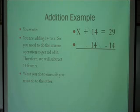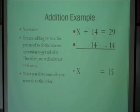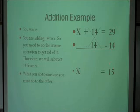On the left side it's going to cancel out, leaving just the x, which is what we wanted. And on the right side it will give us the answer. x equals 15, since 29 minus 14 equals 15.